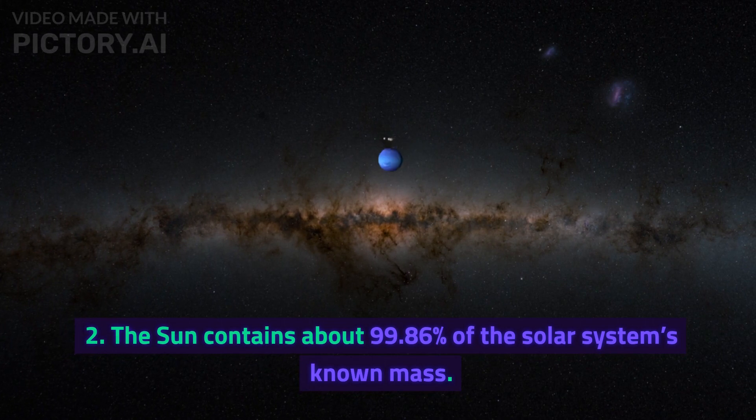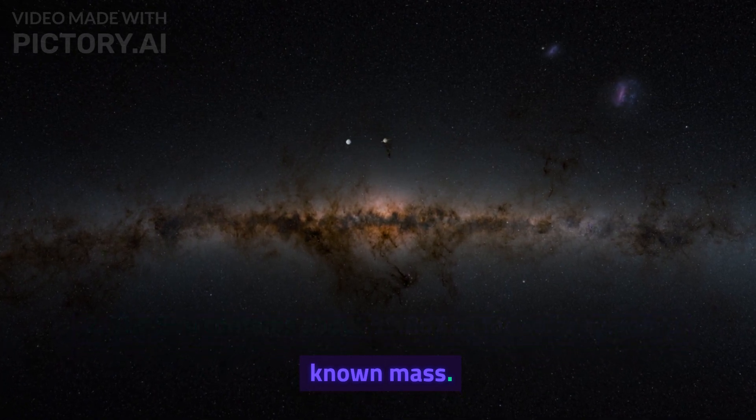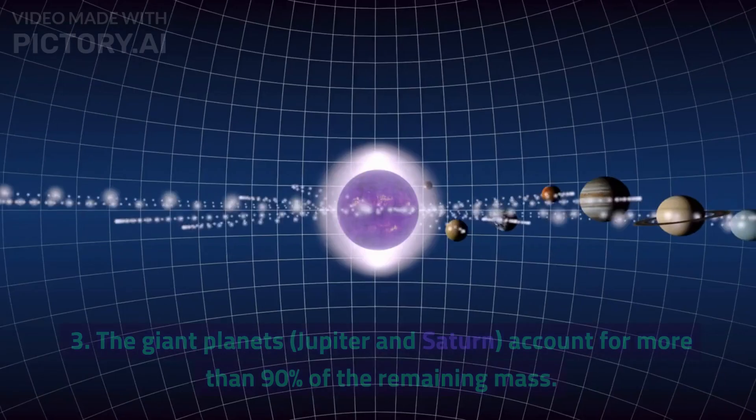Two: The sun contains about 99.86% of the solar system's known mass.